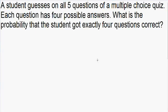So let's get started right away with this example. A student guesses on all five questions of a multiple choice quiz. Each question has four possible answers, and it's asking us what is the probability that the student got exactly four questions correct. Now it's important to recognize that there's only two possible outcomes for this problem: the student is going to get the question correct, or the student is not going to get the question correct. Since there are two possible outcomes, we can solve this problem using binomial distribution.